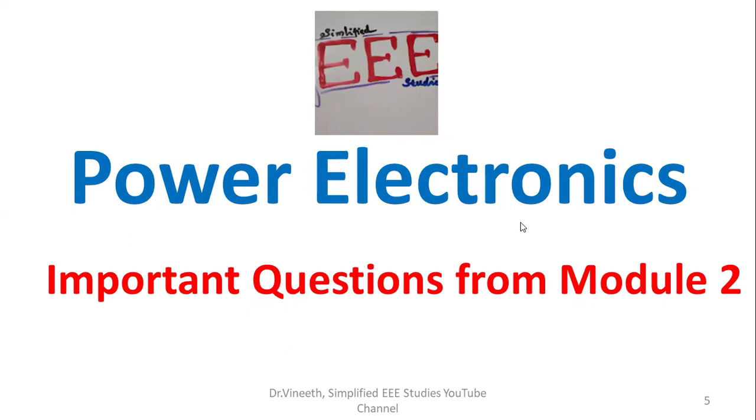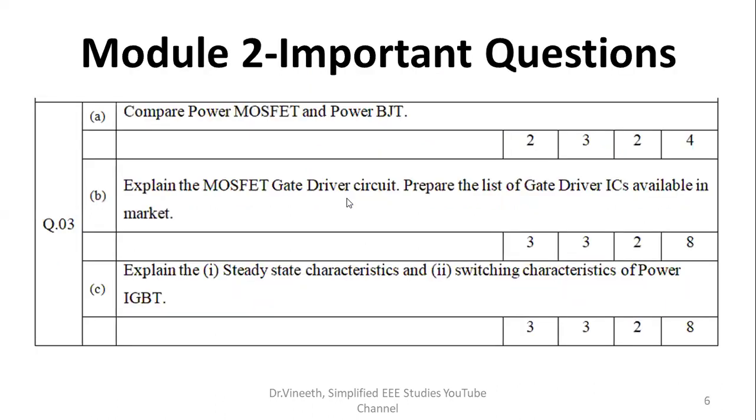Module 2 is mainly including power MOSFET and power BJT. It's mainly talking about the characteristics, the design of power electronic switches, especially power transistors, especially power MOSFET and power BJT.